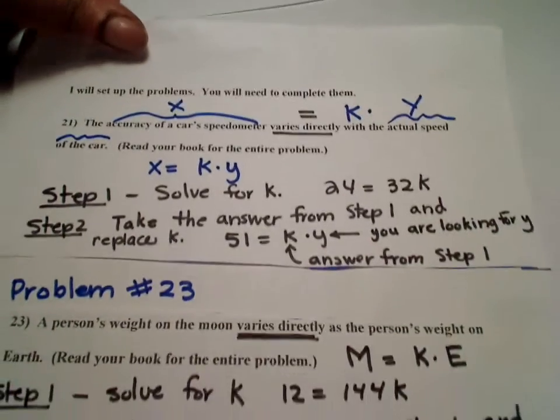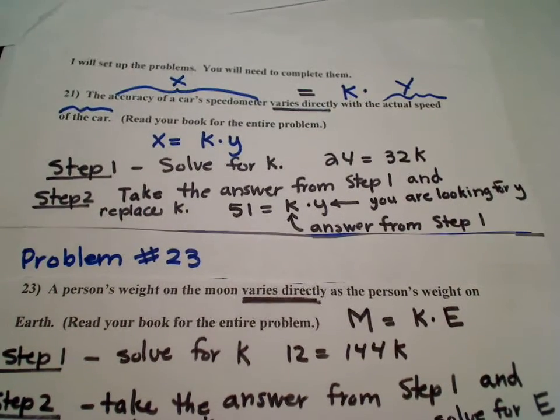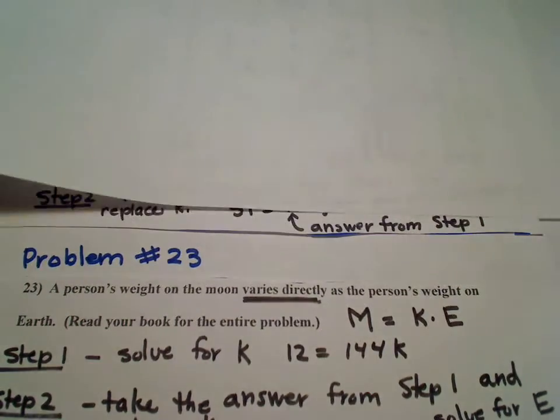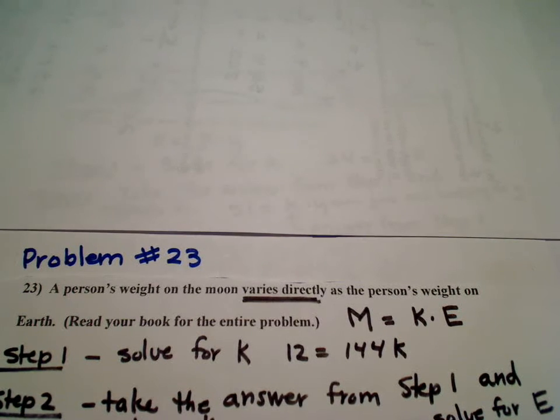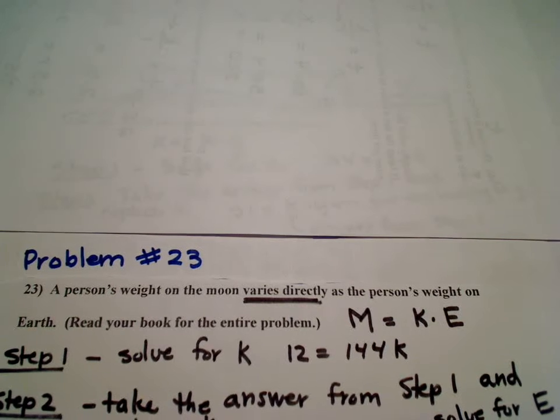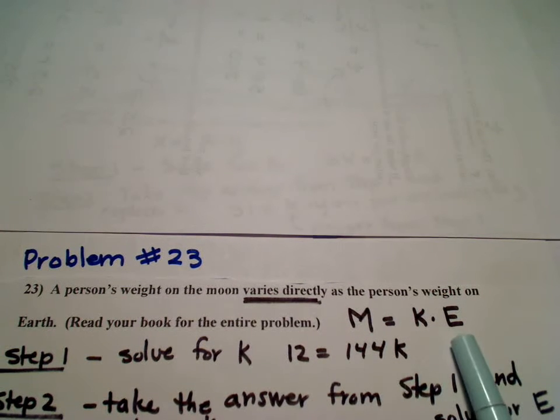Okay, let's look at the next type. That's problem number 23. If you look at problem number 23, it talks about a person's weight on the moon varies directly as a person's weight on the earth. I use m for moon and e for earth.